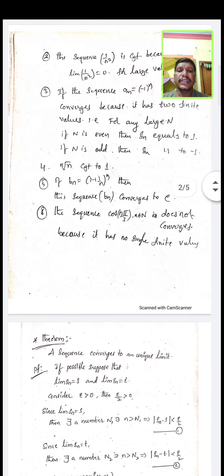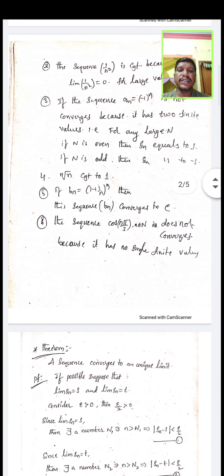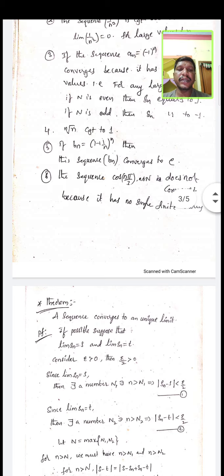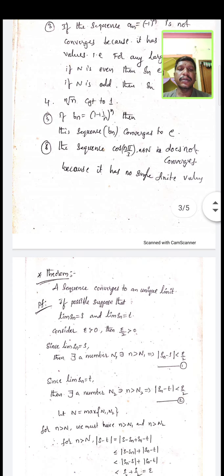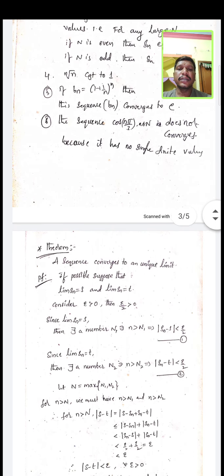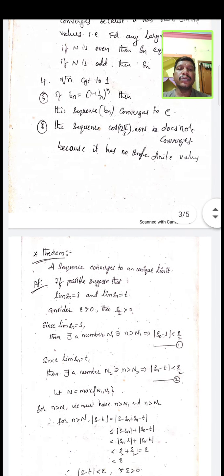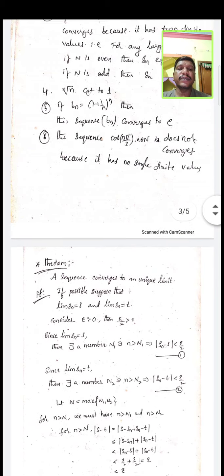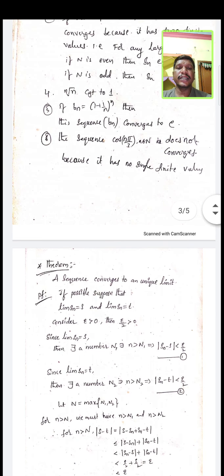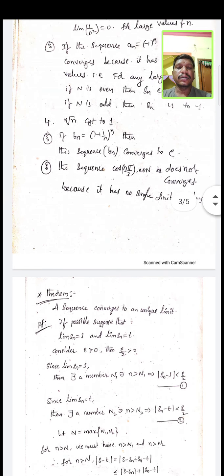The sequence cos(Nπ/3) is also not convergent because there is no single finite value for it.